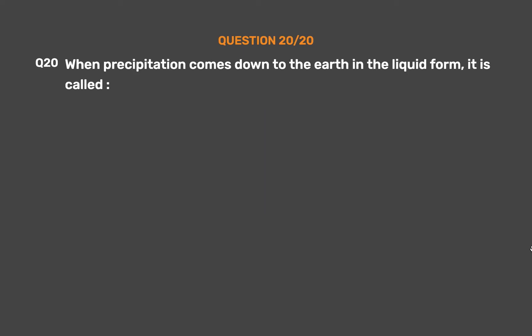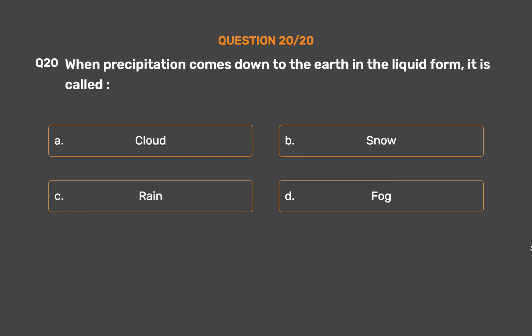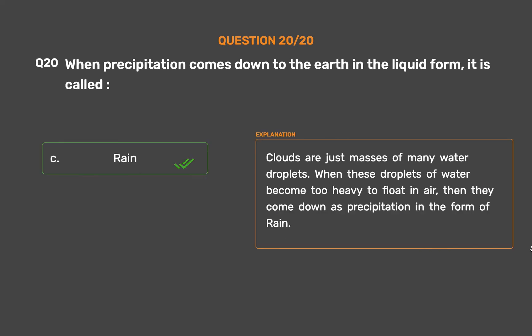Question number 20: When precipitation comes down to the earth in liquid form, it is called? Option A: Cloud. Option B: Snow. Option C: Rain. Option D: None of these. The correct answer is Option C, Rain. Clouds are masses of many water droplets. When these droplets become too heavy to float in air, they come down as precipitation in the form of rain.